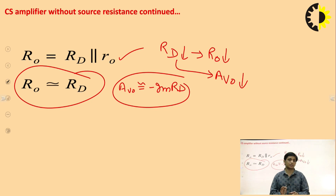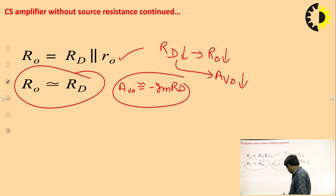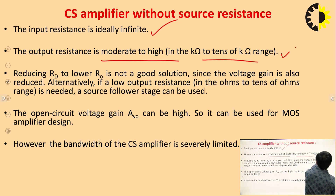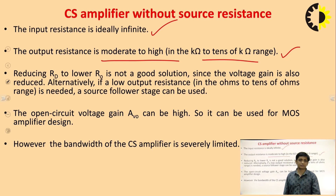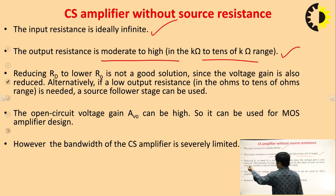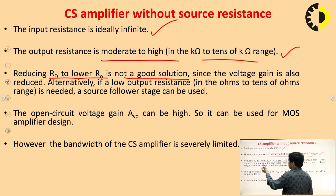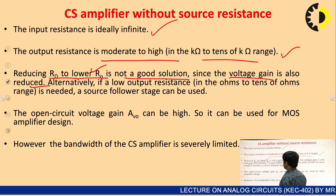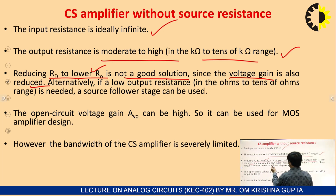This is the summary of the common source amplifier without source resistance. The input resistance is ideally infinite since gate current is zero. Output resistance is moderate to high. To get lower output resistance, use a source follower stage. Reducing Rd to lower Rout is not a good solution because voltage gain is also reduced. To get low output resistance, we use a source follower (common drain amplifier) stage.